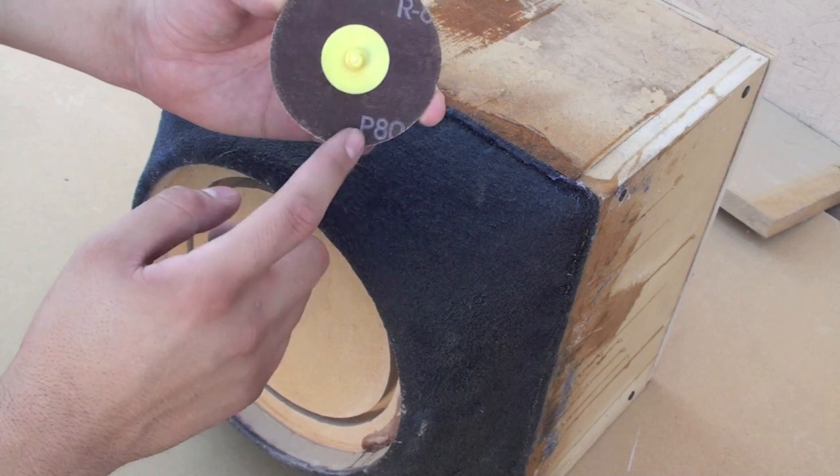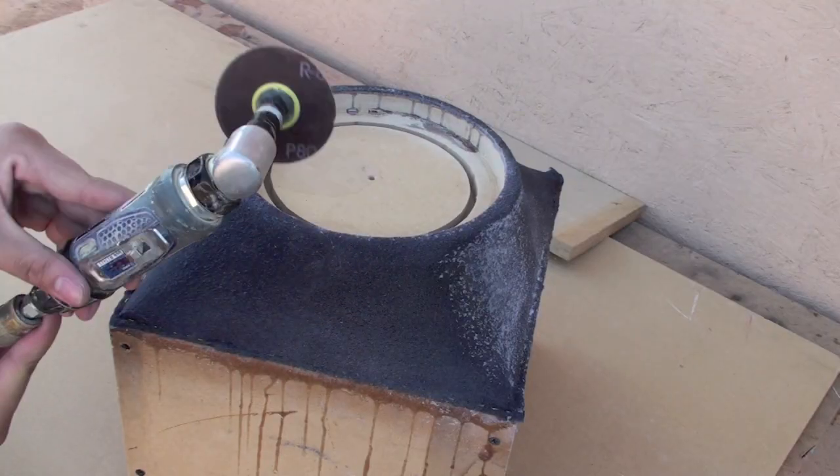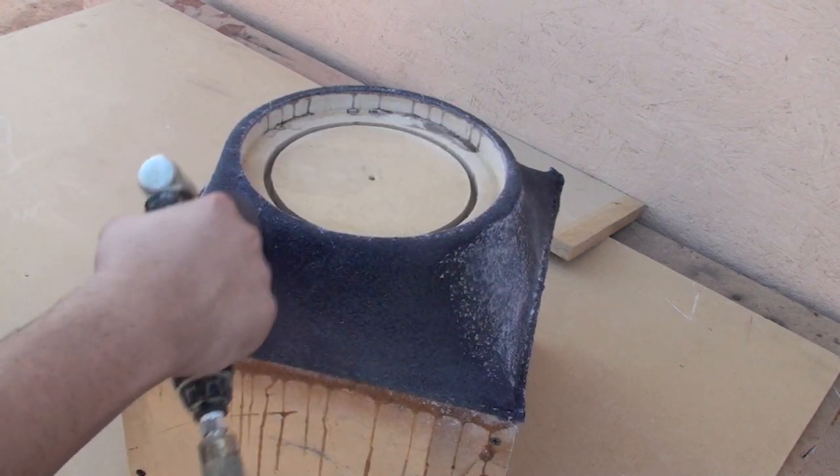We'll sand the baffle using 80 grit. We need to remove the residue left from the resin. You can also use a pneumatic angle die grinder to speed up the process.